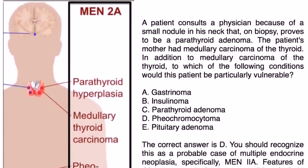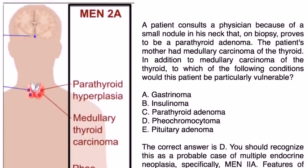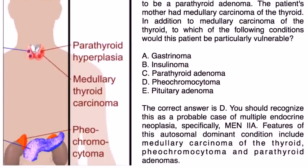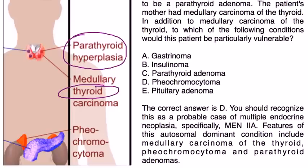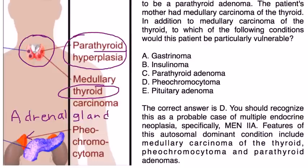Before getting into everything, here is a picture that illustrates the three endocrine glands involved in MEN2A. The first is the parathyroid — there's an arrow pointing to the four small parathyroid glands. The thyroid gland is in pretty much the same location, so you can remember thyroid and parathyroid are both up in the neck area. The final gland, indicated by another arrow, is the adrenal gland, and the tumor involved in MEN2A is called a pheochromocytoma.